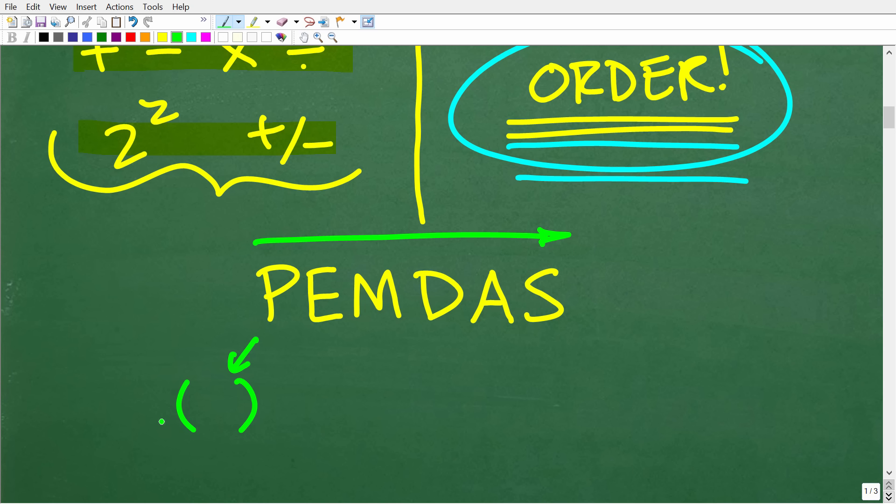So let's go ahead and start right here with P. Again, this is a checklist from left to right. So P stands for parentheses. So if we have any parentheses or brackets or these type of squiggly brackets, these are what we call grouping symbols in mathematics. So if we have any of these, we're going to start there.